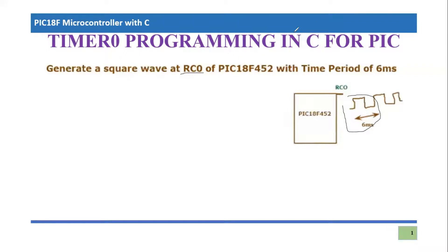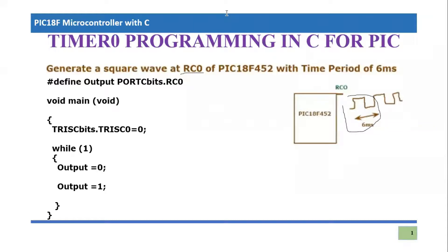I have written the complete code for turning on and turning off the output. In the very first line, I've defined a macro called 'output' associated with PORTCbits.RC0 — that is the pin from where we generate the square wave output. Then the code starts with 'void main(void)', and the next important line is 'TRISCbits.TRISC0 = 0', which declares this pin as an output pin.